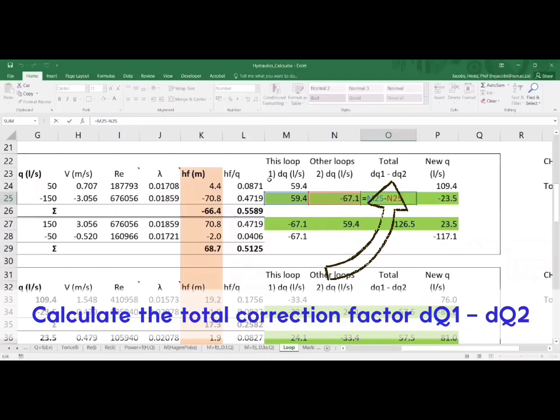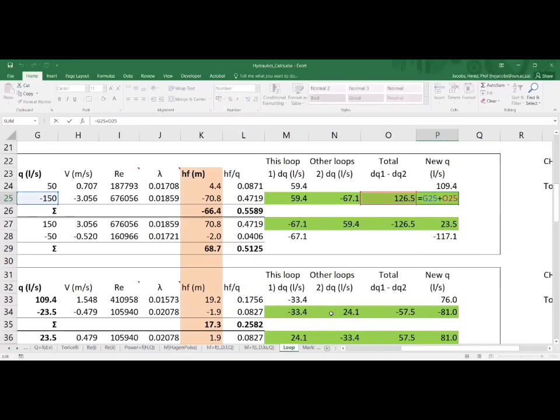Now, there's one correction factor for every loop. Apply that correction factor to each pipe to find a new Q value.